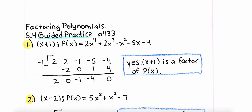We want to see if x plus one is a factor of the polynomial P of x. The number negative one would be the root, or the zero, of x plus one. I copy down the coefficients. Drop the two. Negative one times two is negative two, then I add and get zero. Negative one times zero is zero, I add and get negative one. Negative one times negative one is one, I add and get negative four. Negative one times negative four is four, I add and get zero. Because I ended up with a remainder of zero, yes, x plus one is a factor of P of x.